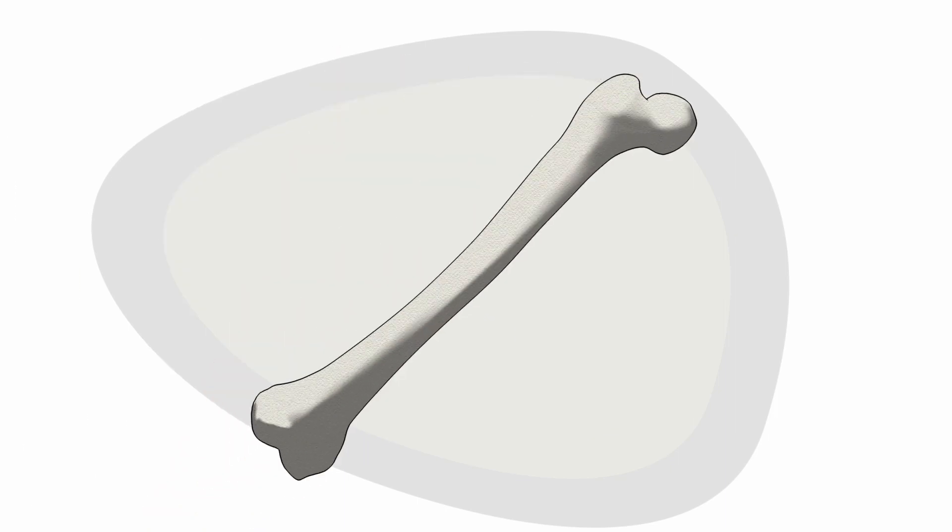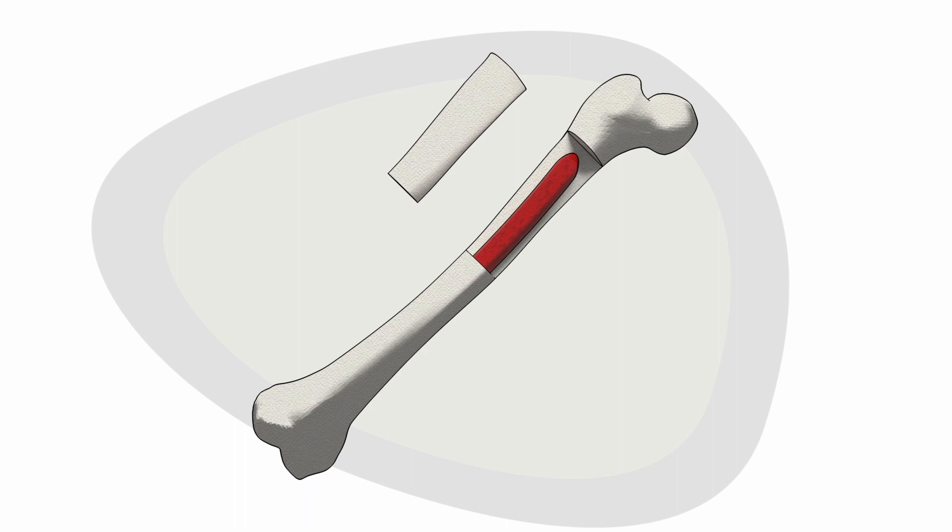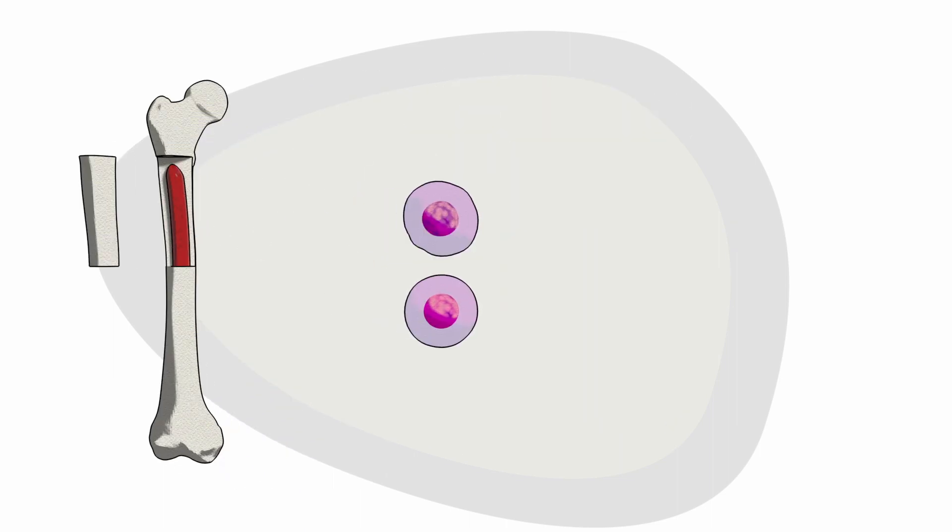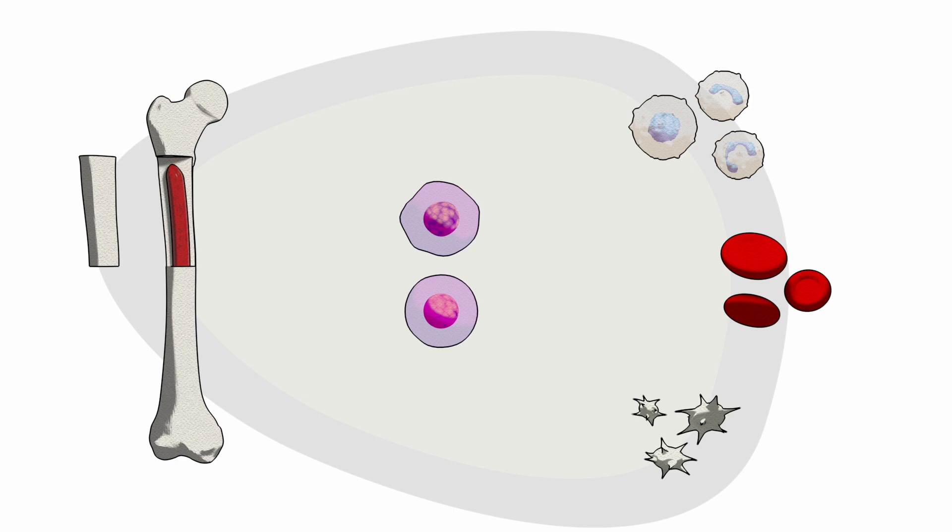CLL is a type of blood cancer that starts in the bone marrow. Bone marrow is the soft inner part of the bone, where stem cells and three main types of blood cells are formed: white blood cells, red blood cells, and platelets.